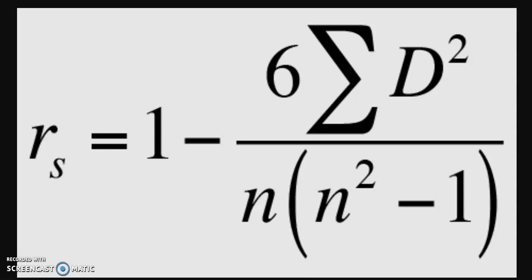We're going to talk about Spearman's rank correlation coefficient. The formula is R equals 1 minus 6 sigma d squared over n open brackets n squared minus 1 close brackets. Sometimes you might see n cubed minus n instead of n(n² - 1).